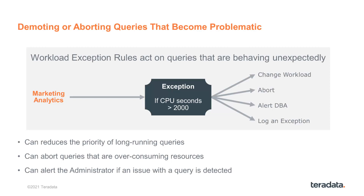Maybe it's a request that looked perfectly reasonable, but for some reason — the way it's executing or characteristics that were not able to be identified before it started — it began to become a bit of a problem query, consuming large amounts of CPU. You may want to act on that query, and there are different actions you can take. This is all automated once you define the workload exception rule.